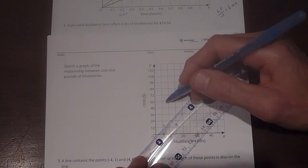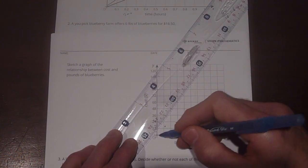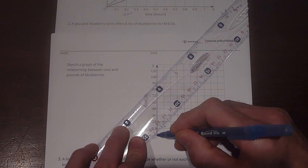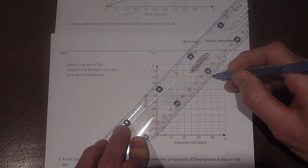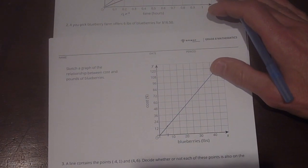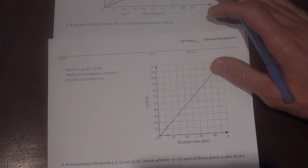Okay. So now I take my ruler, and I know that because it's a proportional relationship, it has to start at the origin and continue on in a straight line. That's going to be my graph of how much it would cost. Okay. The relationship between cost and pounds of blueberries.